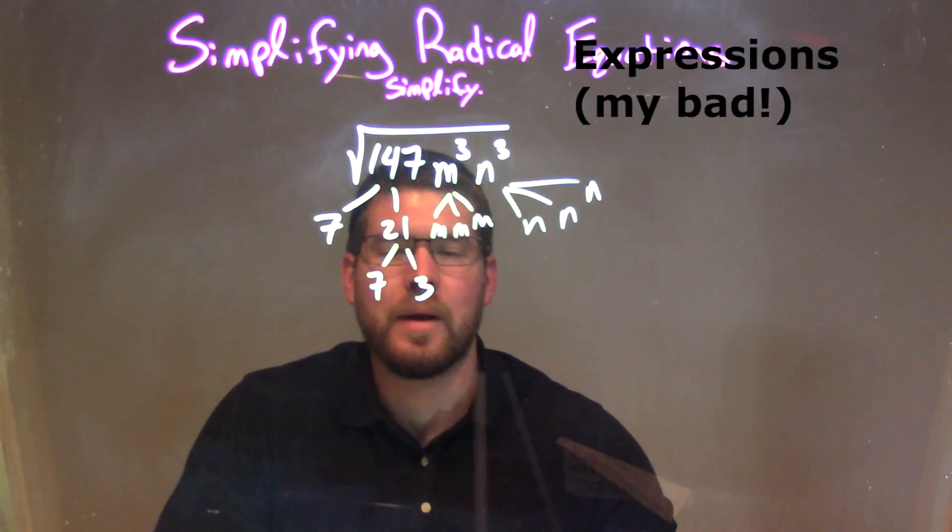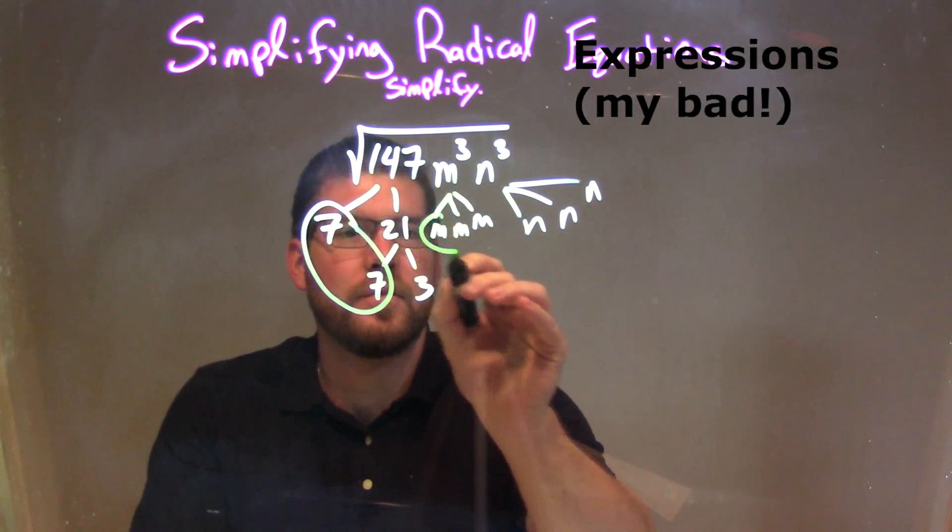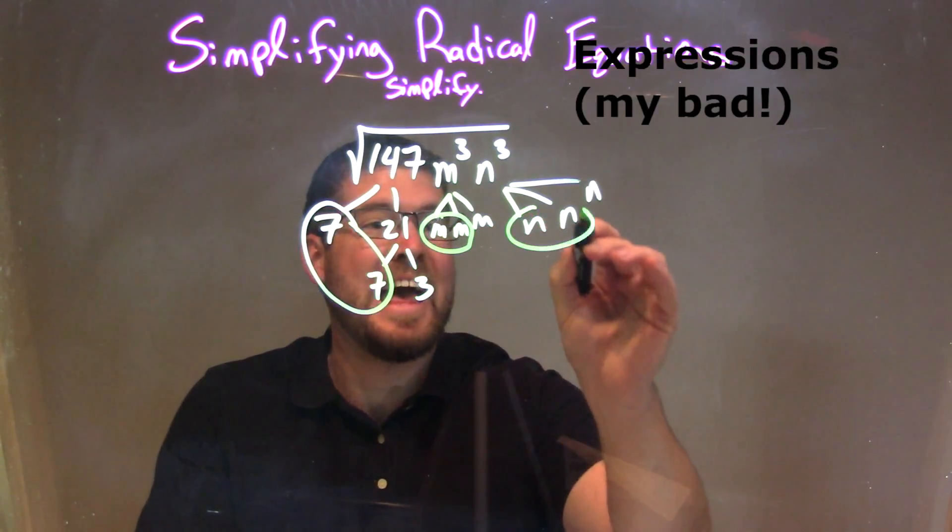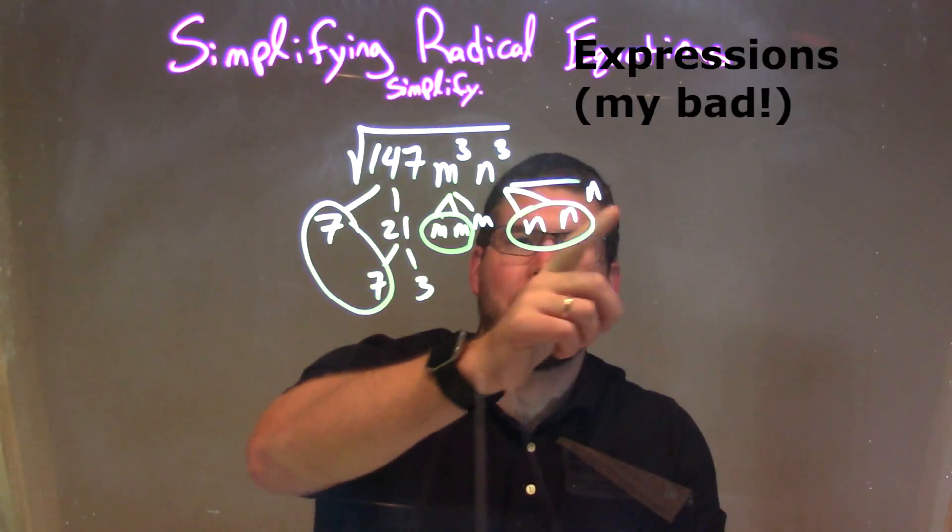So what I'm going to do now is circle my pairs. I have a pair of 7s right here, I have a pair of ms, one pair of ms, and I have a pair of ns. So what's left is a 3 times an m and a n.